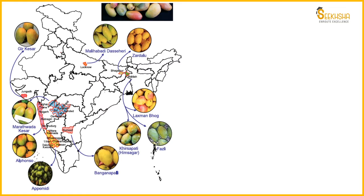We'll discuss GI tags quickly. These are the GI-tagged varieties visible on screen. Starting from the beginning: first is Gir Kesar - Gir Kesar is a variety from Gujarat. Next, on this side, is Maliyabadi Dasheri - Maliyabadi Dasheri comes under Uttar Pradesh.